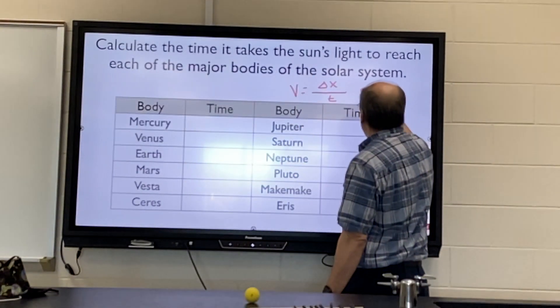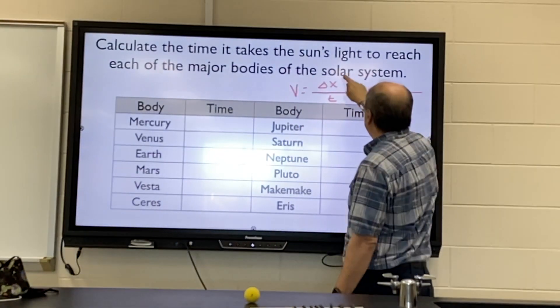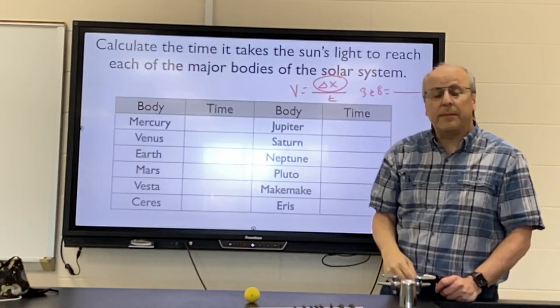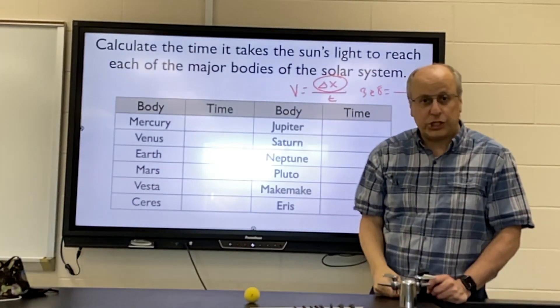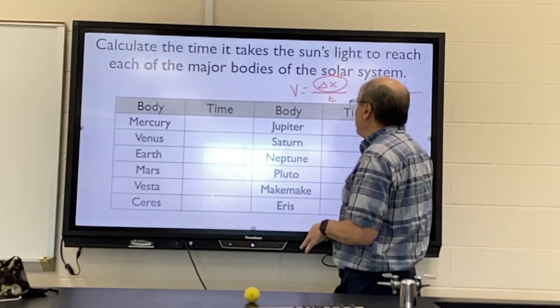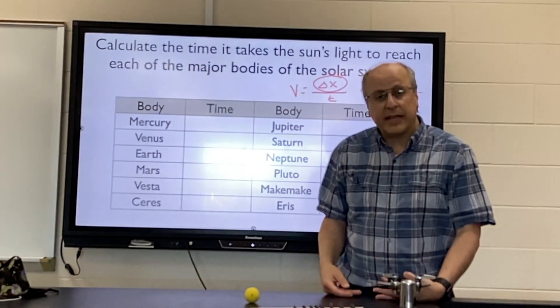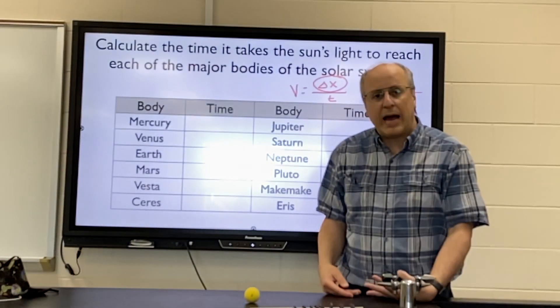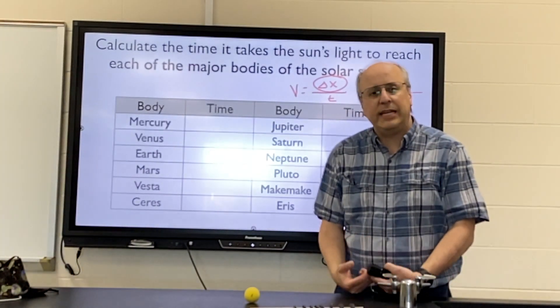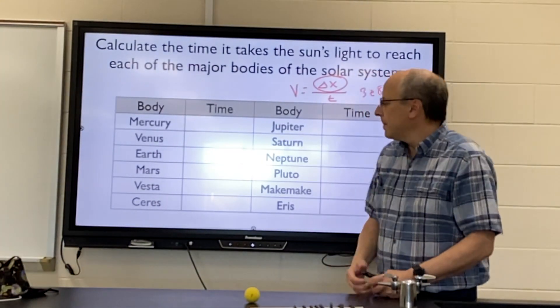For velocity you're going to use 3 × 10^8, and for the distance you're going to look them up on your planetary reference sheet. Some of these may come out to be really large numbers. If they are a large number of seconds, change them into minutes or hours so that they are easier to communicate.